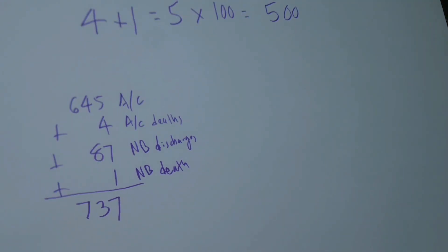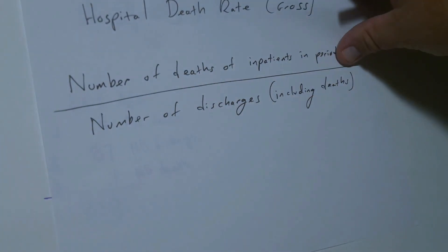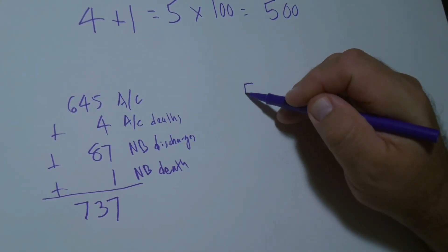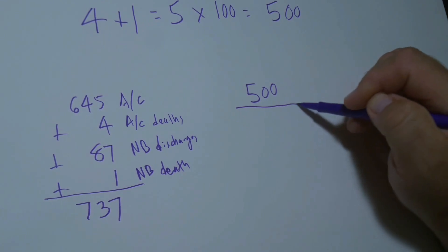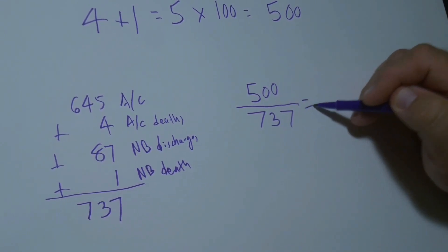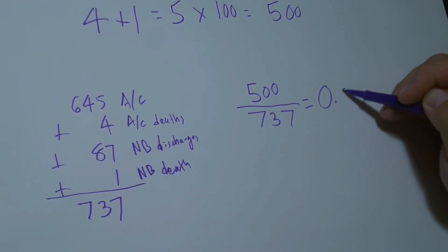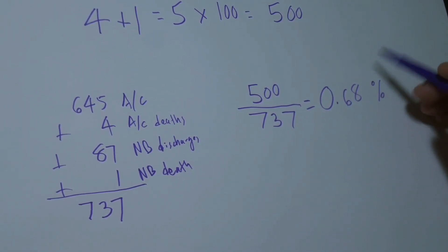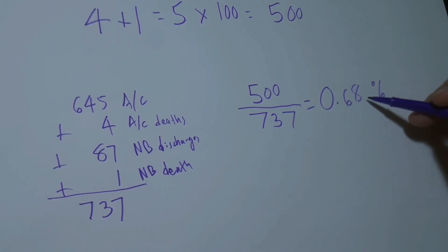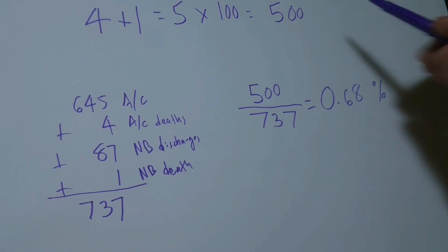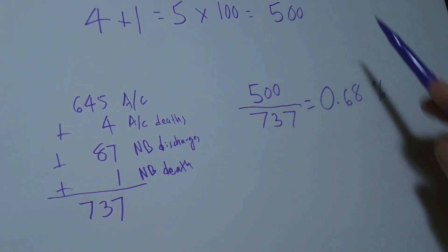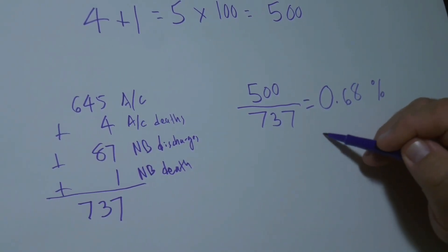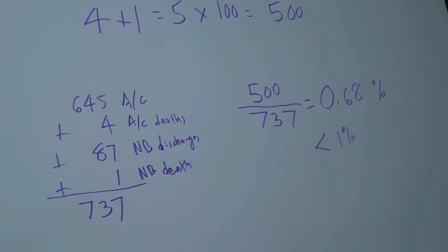The last thing to do in our formula is to divide the numerator by the denominator. Numerator is 500, denominator is 737. Put that into your calculator and you get 0.68. Now because we multiplied by 100 this is going to be a percentage — don't get confused and say it's 68%. We've already multiplied by 100, so this is 0.68%. In other words, it's less than 1%.